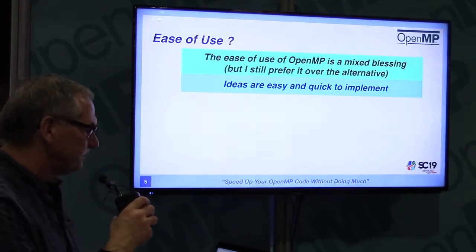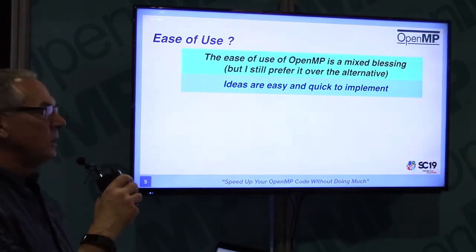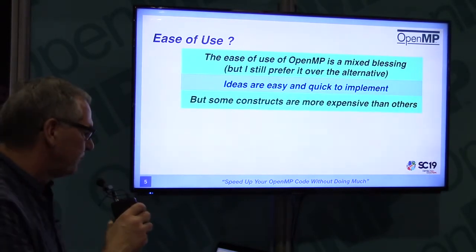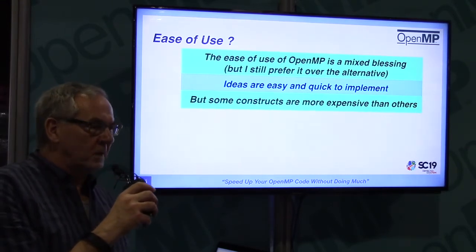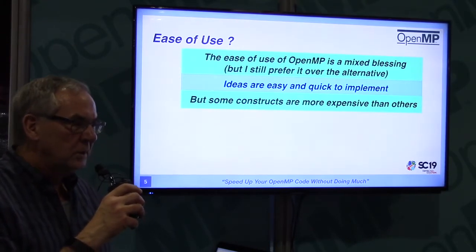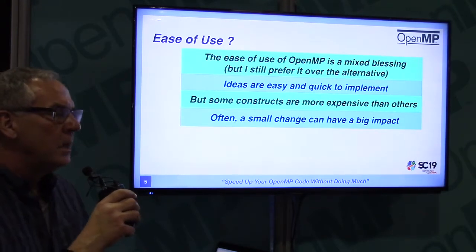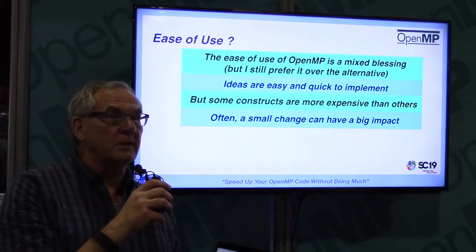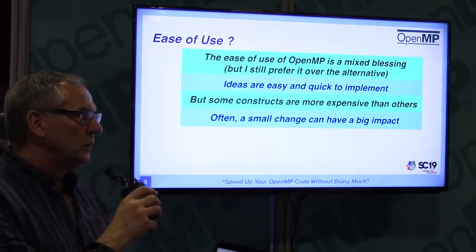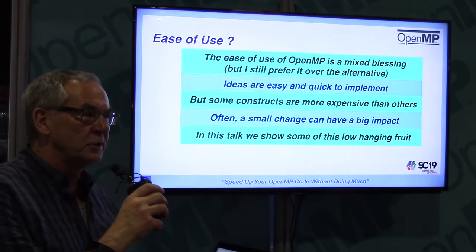It's quite easy to get your OpenMP up and running, but then it won't scale. That's when things get hard. You have your prototype running very quickly, you implement your idea, but maybe the performance is not as good as you expected. Some things are more expensive than others and you have to know about that. A relatively small change can have quite a big impact — that's what I mean by low-hanging fruit.